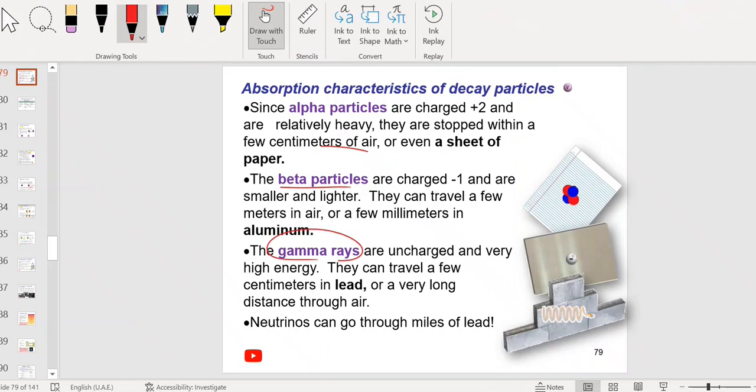While gamma rays, it's uncharged and light, and their energy is really high. They can penetrate even few centimeter in lead and very long distance in air. So gamma particles can go through lead.